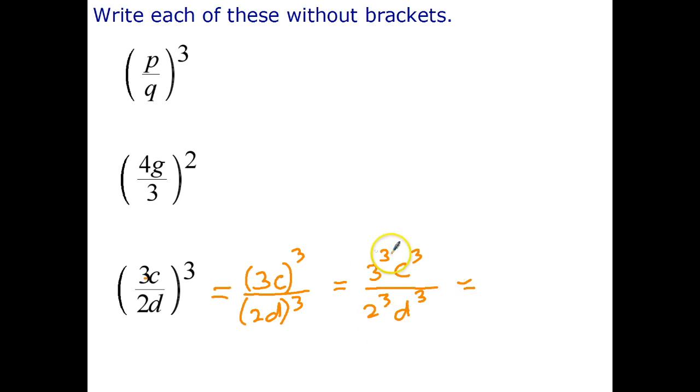So now we've done what we were asked to do which is to write that without brackets. However, normally if you've got a number to a power we tend to simplify that a bit further. 3 times 3 times 3 is 27 c to the power of 3 and 2 times 2 times 2 is 8 d to the power of 3.